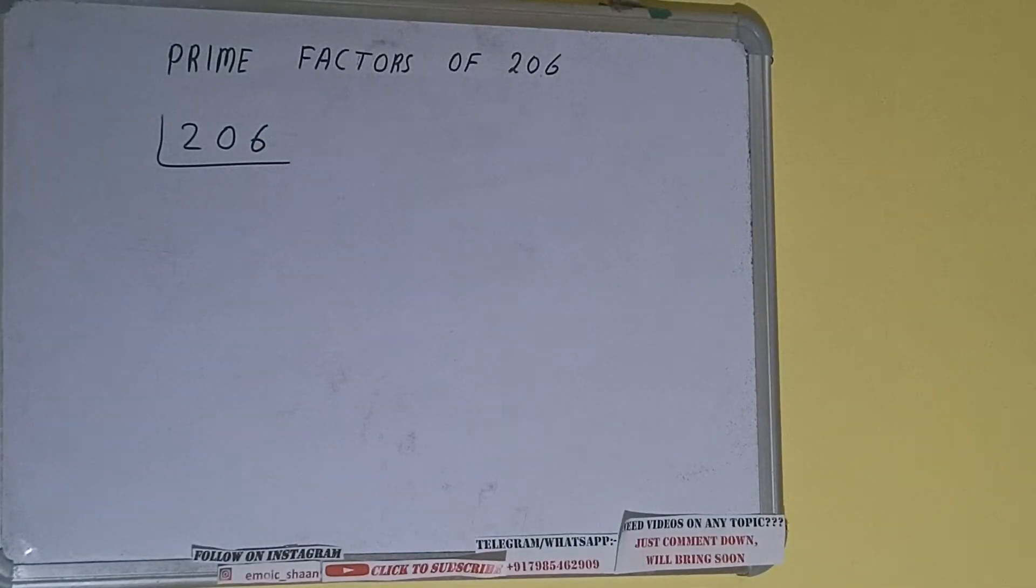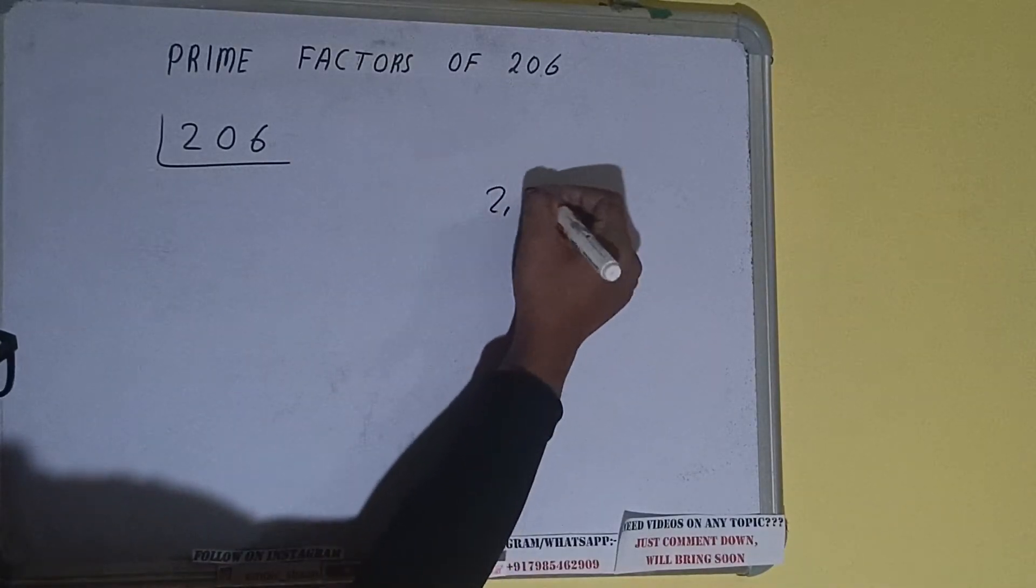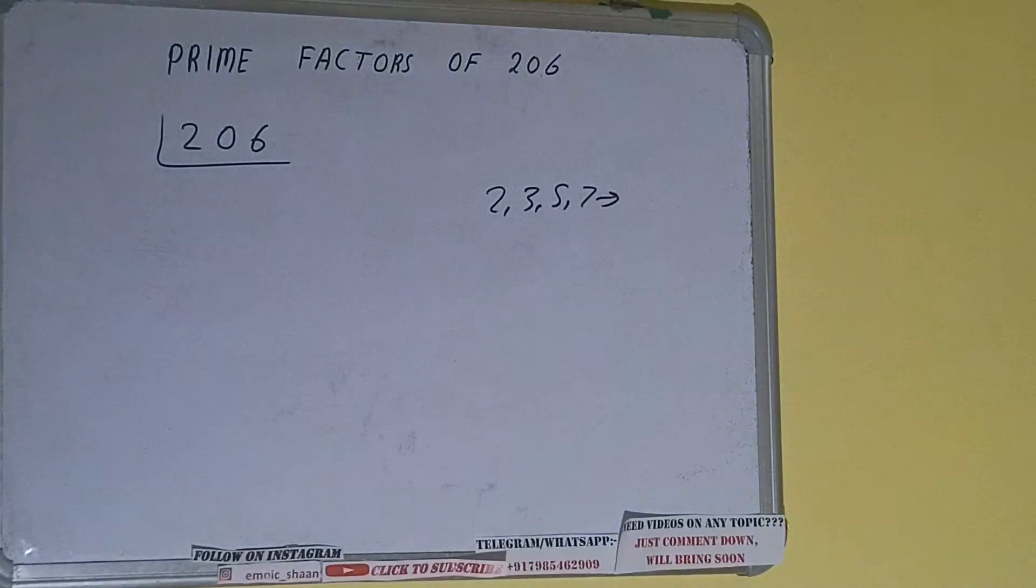So prime numbers are numbers that are divisible by 1 and the number itself like 2, 3, 5, 7 and so on.